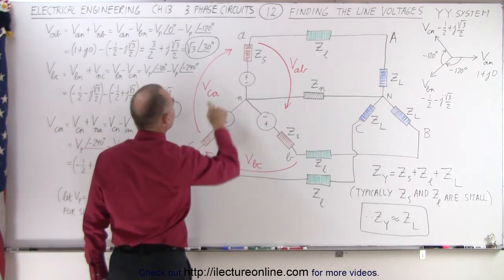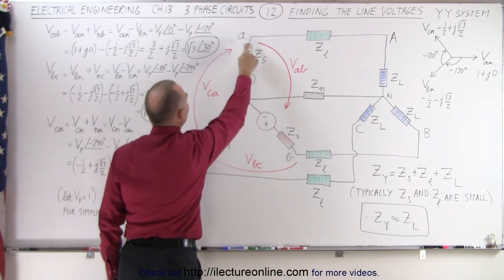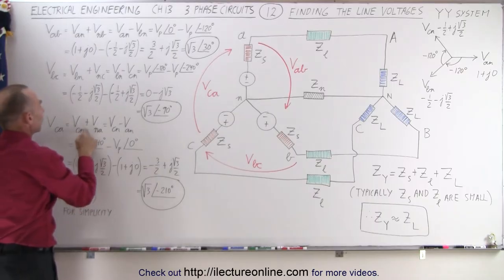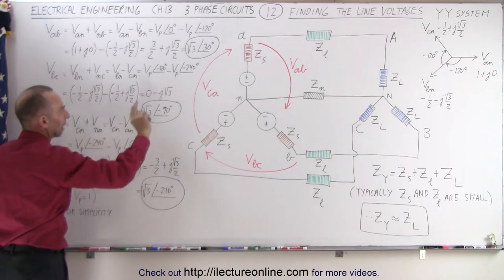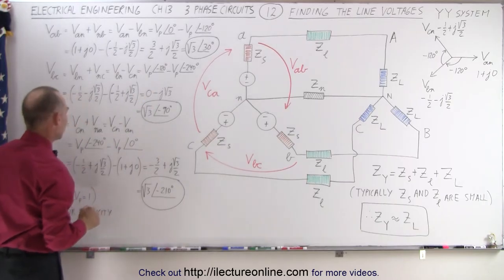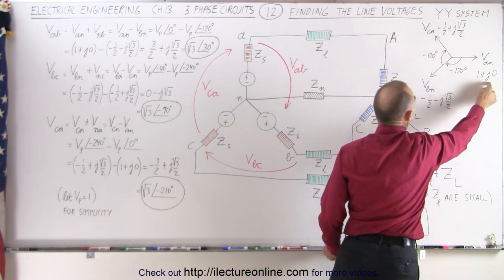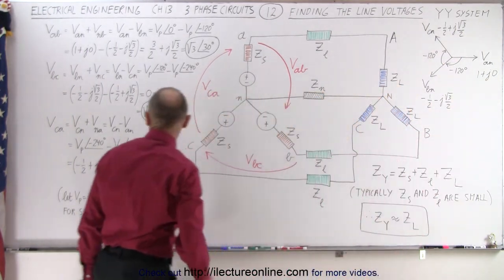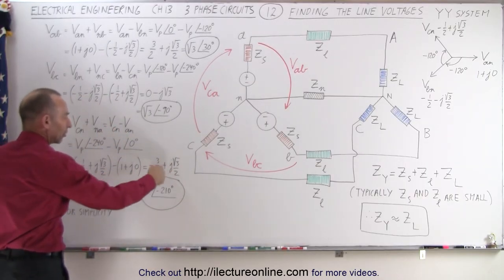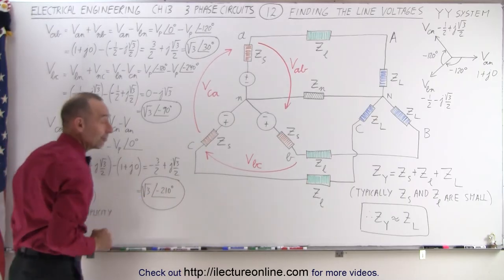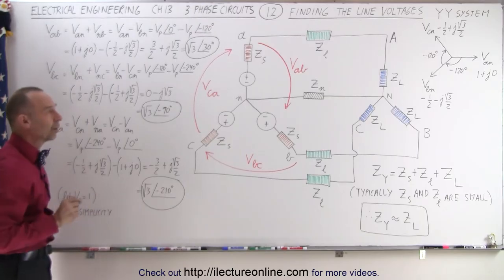Finally, we find the voltage between C and A, which equals the voltage of C to N plus the voltage of N to A — in other words, V_CN plus V_NA, which is V_CN minus the voltage of A to N. Taking the voltage V_CN and subtracting voltage V_AN from that gives a magnitude of the square root of three at a phase angle of minus 210 degrees, again letting the phase voltage equal one for simplicity.